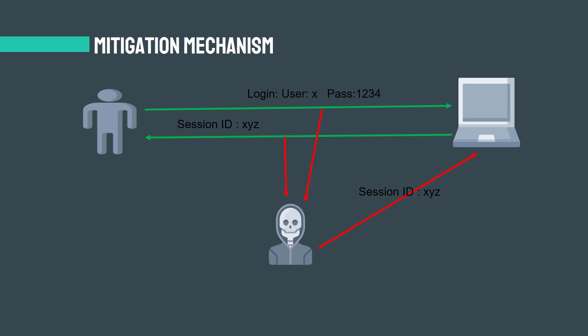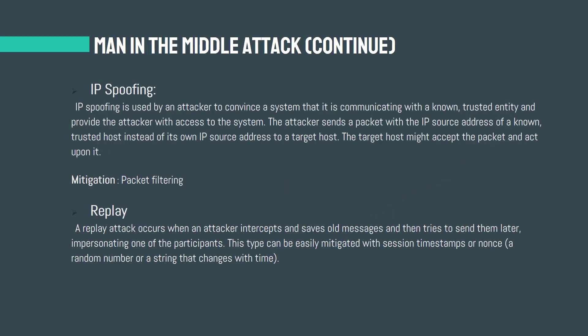For the next type of man-in-the-middle attack, we have IP spoofing. IP spoofing is used by an attacker to convince the system that it is communicating with a non-trusted entity and provide the attacker with access to the system. The attacker sends a packet with the IP source address of a non-trusted host instead of its own IP source address to a target host. The target host might accept the packet and act upon it.